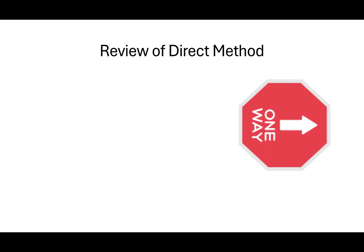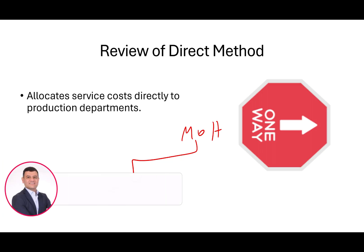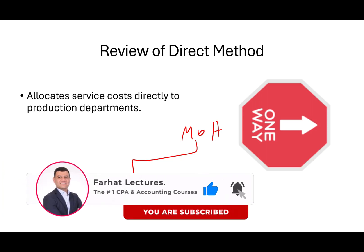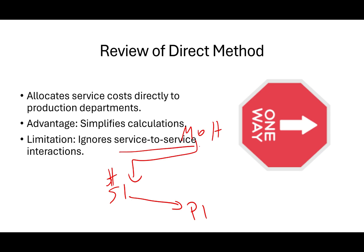Let's review the direct method briefly before we work an example. It allocates the service cost directly to the production department. Manufacturing overhead is allocated first to the service department, and then that money is allocated directly to the production department. The advantage of this method is simplified calculation. Its limitation is that it ignores service-to-service interaction — sometimes a service department may use another service department before servicing the production department.